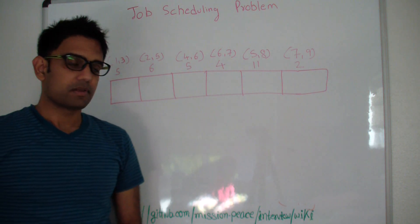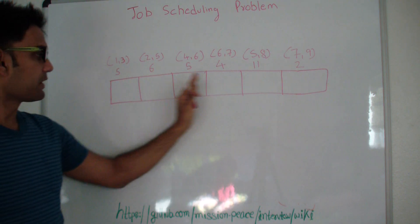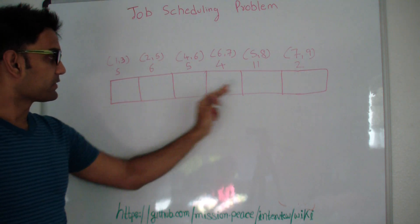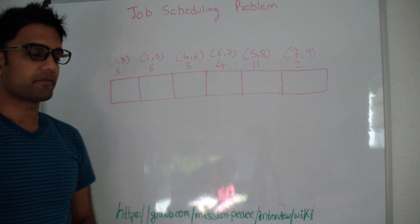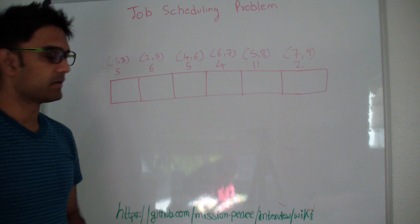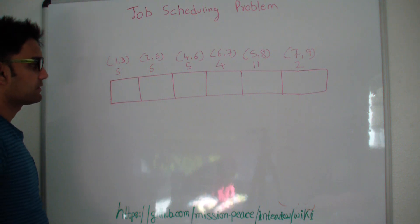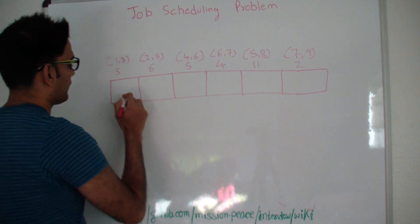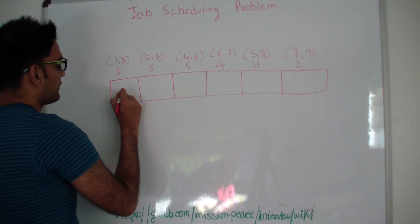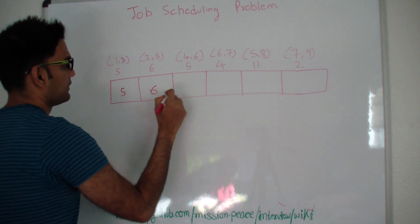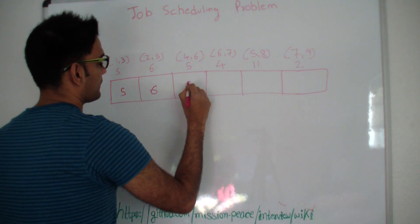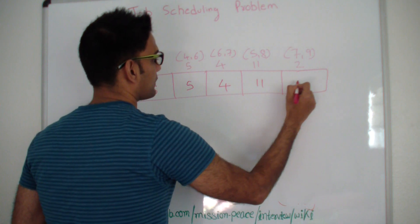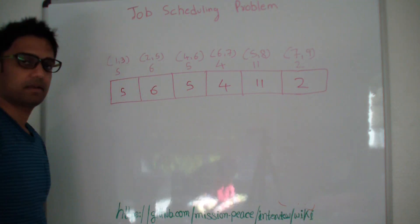Now I have a temporary array of the same size, and I'm going to fill this array — finally this array will have our result. Let's put the profit numbers as-is into the array: 5, 6, 5, 4, 11, and 2.